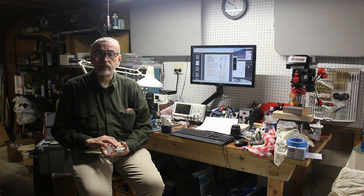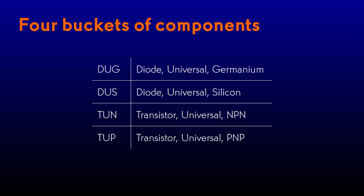Nine times out of ten, the devices I call for will fall into one of only four categories. Back in the day, a Lector magazine used to print schematics that would replace the part numbers with one of four abbreviations: DUG, diode universal germanium; DUS, diode universal silicon; TUN, transistor universal NPN; and TUP, transistor universal PNP. They used these rather than part numbers because any one of a hundred or so different types will do.